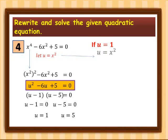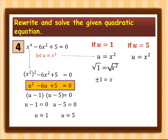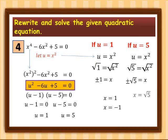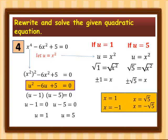Solving for x: if u = 1 and u = x squared, substituting gives 1 = x squared, so x = positive and negative 1. If u = 5 and u = x squared, substituting gives 5 = x squared, so x = positive and negative square root of 5. The four roots of Example 4 are x = 1, x = −1, x = √5, and x = −√5. That's all for today — thank you so much, Grade 9!